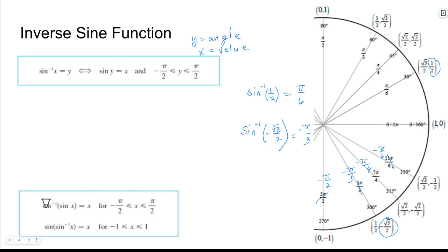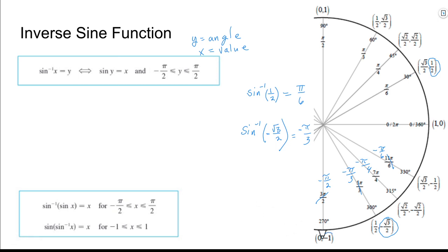One key property: when you take the inverse sine of sine of x, you get back to x — this works as long as x is between negative pi over 2 and pi over 2. Going the other way, sine of inverse sine of x equals x, as long as x is between negative 1 and 1, because if it isn't we won't be able to find it. For inverse sine, the inputs must be between negative 1 and 1 — those are all the possible inputs, just the y-coordinates on the unit circle.